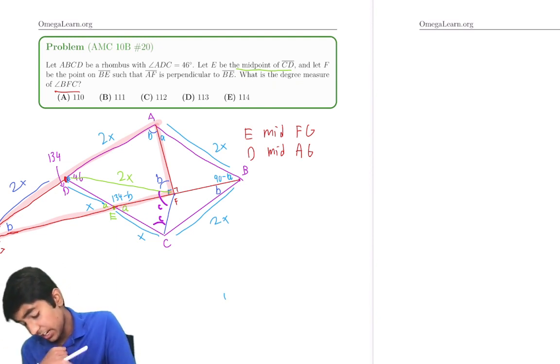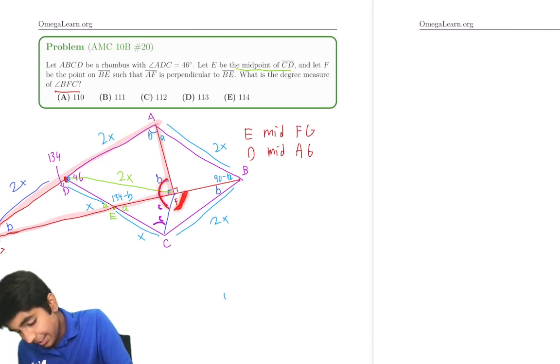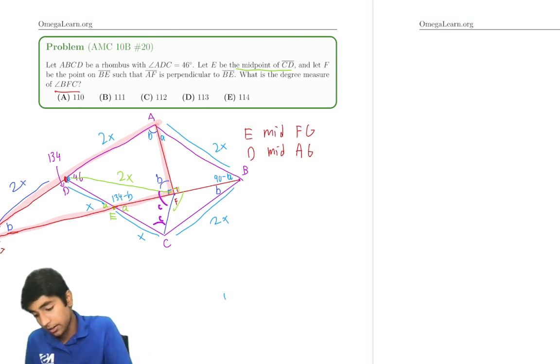We've got this 90 degree angle right there. We've got this C angle, this B angle. Oh, I see. This angle here, plus 90, plus B, plus C makes up a circle, 360 degrees.